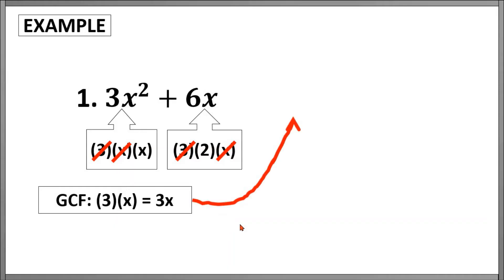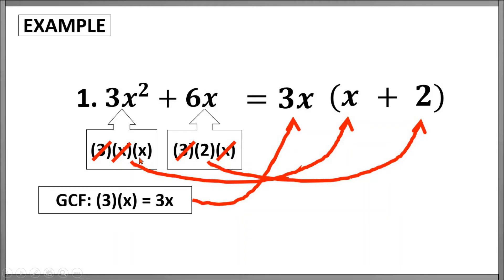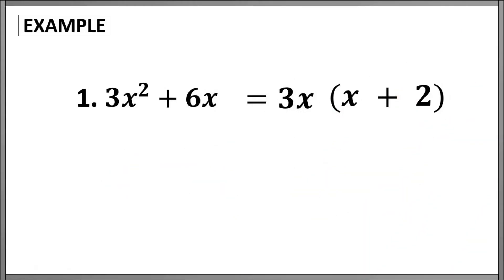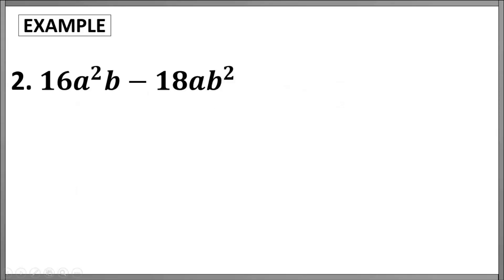Multiplying these common factors will result in the GCF. We will take this GCF as one of the factors for our answer. For our second factor, we will use the remaining factors of the two terms. For the first term we still have x left, while for the second term we still have 2. The other factor now is x plus 2, retaining the plus sign from the given. Therefore, the answer is 3x times the quantity x plus 2.